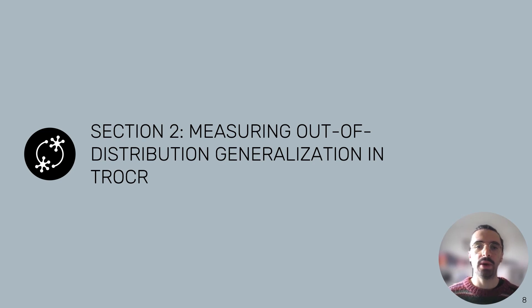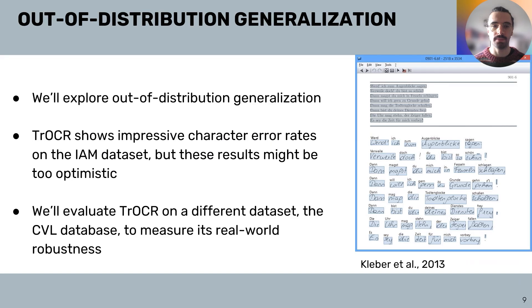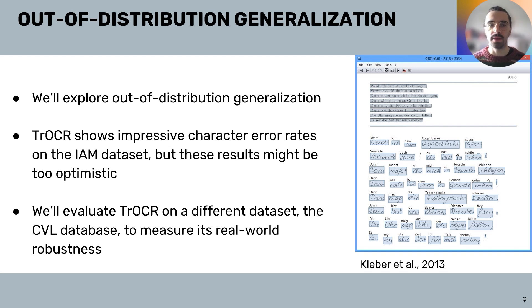Welcome to section two. Here we'll explore an essential aspect of machine learning: out-of-distribution generalization, using the Trocker model as our example. Trocker shows impressive character error rates on the IAM dataset, but these results might be too optimistic. IAM is a 25-year-old dataset recorded on tablets, whereas our developers' notes app needs to recognize modern handwriting on paper. This discrepancy, for example, can lead to unexpected performance issues.